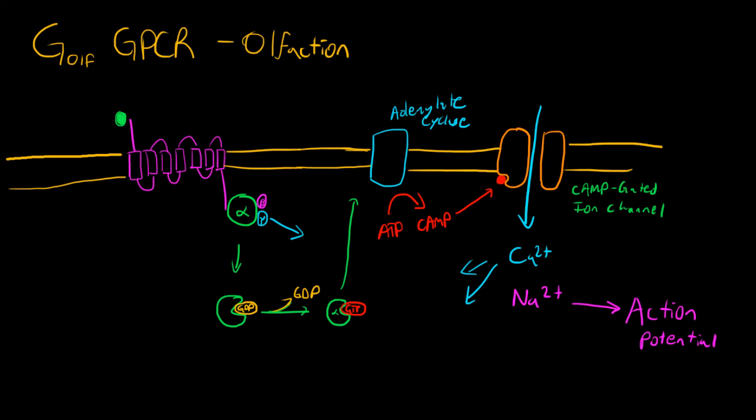So basically, once this ligand binds, we change the membrane potential through the cyclic AMP-gated ion channel, which is propagated down the axon as an action potential. And it goes to your brain saying, hey, there's a smelly smell that smells smelly.